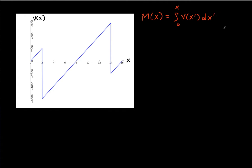So let's just go ahead and do this. Between 0 and 2 feet, my v of x just looks like this. It's got a slope of 1,000 pounds per foot. So I can write down that if x is between 0 and 2 feet,